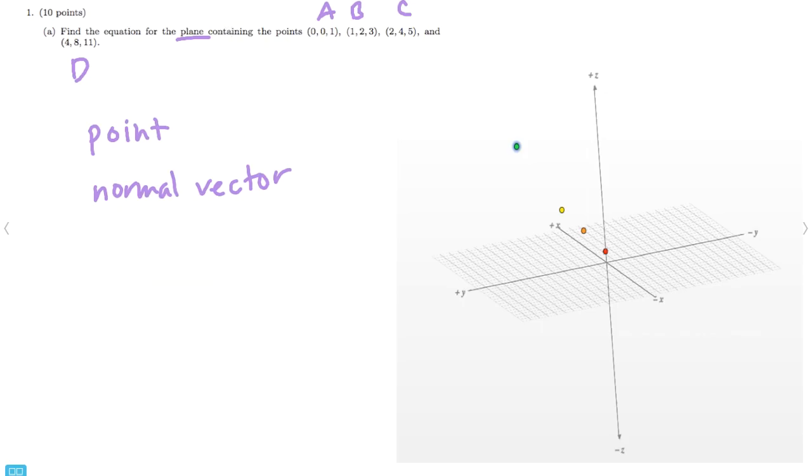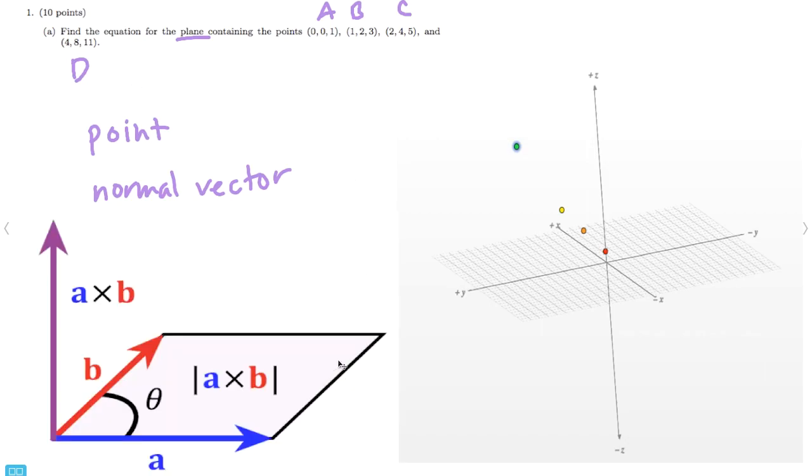The way that we can find a normal vector is by making two vectors out of these points and then crossing them. And the reason that works is, if you can see this picture here, these two vectors are contained within the plane, right? And when we cross something, we find a vector that is perpendicular to both of those vectors. And, since those two vectors are contained within it, this would also be perpendicular to the entire plane.